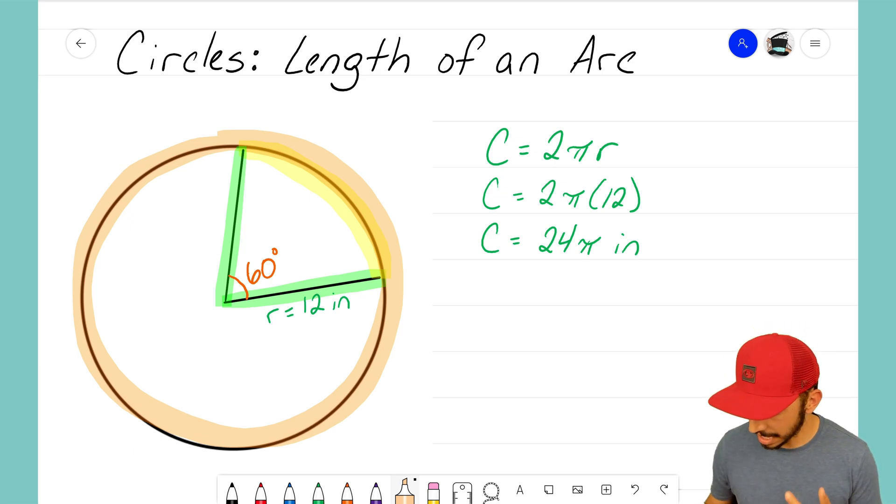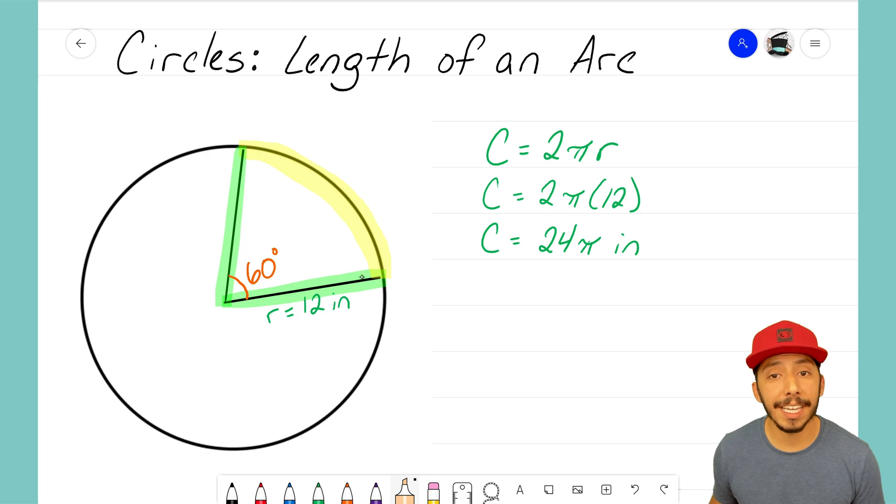But again, I'm not interested in knowing the full circumference. I only want to find the highlighted portion in yellow, the arc. And to adjust for that, we're going to need to now involve that 60-degree central angle. Notice that that 60-degree central angle there is a part of all of the central angles in the center of that circle. Remember that a circle adds up to 360 degrees. So the portion or the sector of the circle that I'm interested in is 60 degrees out of 360 degrees.